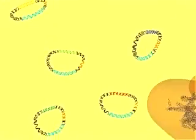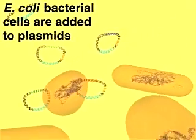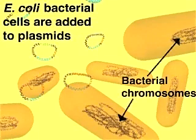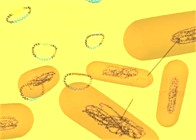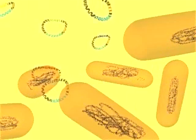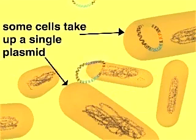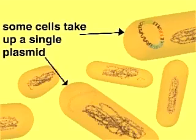Next, the host cells, E. coli bacteria, are added to the recombinant plasmids. The cells have been treated with calcium chloride to make them permeable to DNA molecules. Through a process called transformation, a few cells take up a recombinant plasmid, while most other cells do not.